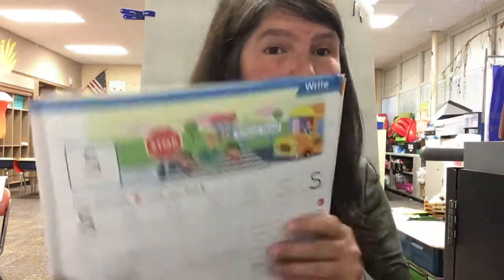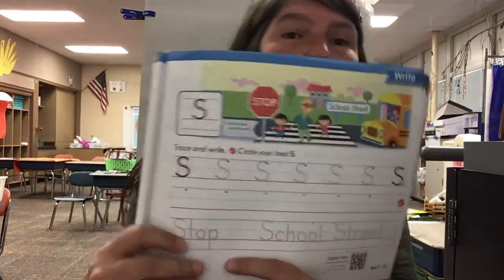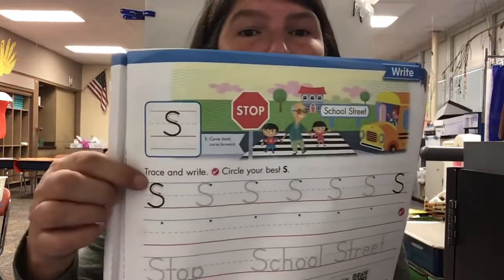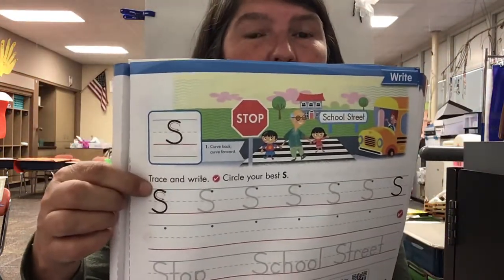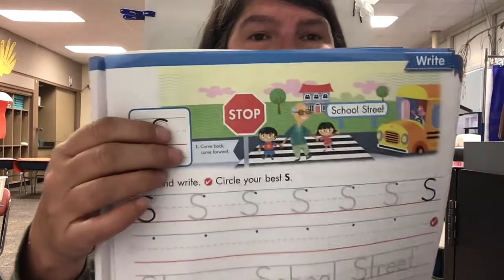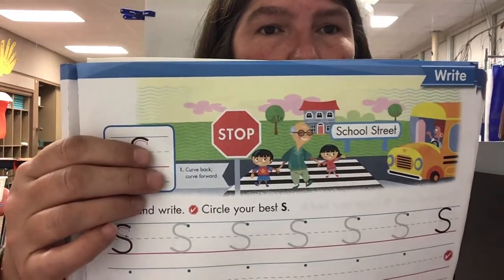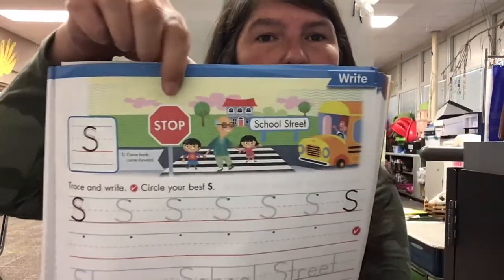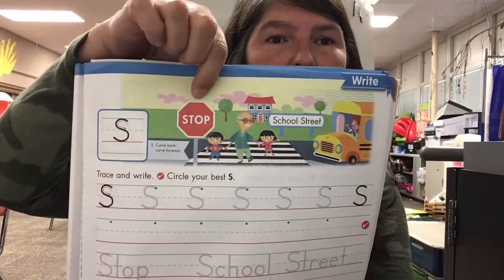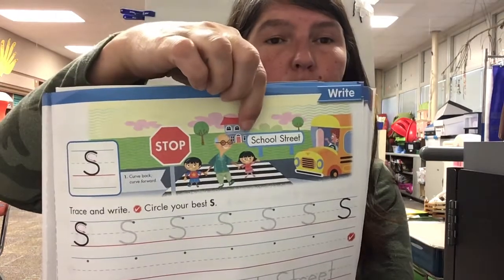Hi boys and girls! Yesterday you did lowercase S, and today you're going to do uppercase S. You should fill in between the top and the bottom line — you circle back and then you curve forward. S words: stop, school, street.